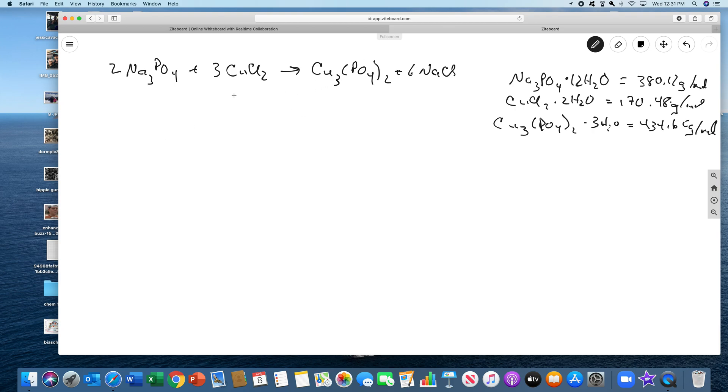In part A of the experiment, you're going to be given an assigned amount of sodium phosphate and copper chloride. You're going to make copper phosphate and calculate the percent yield. Percent yield is the actual yield over the theoretical yield times 100. The actual is what you got from the experiment. The theoretical is from the stoichiometry.